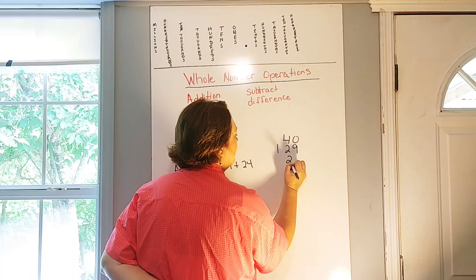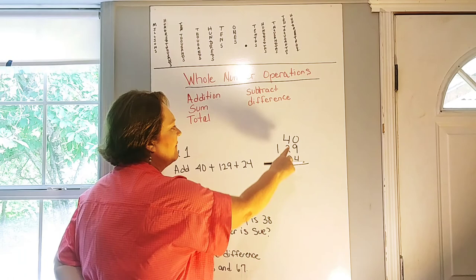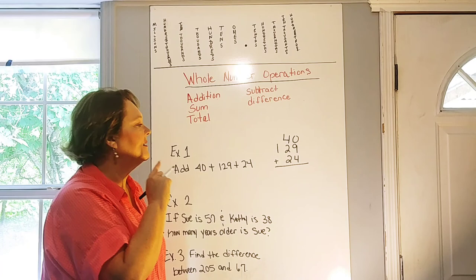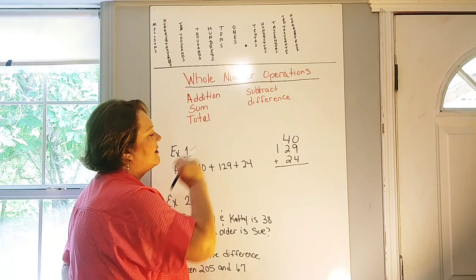Going back to our last lesson, we see that all of these have a number in the ones place. All of these have a number in the tens place, but only one has a number in the hundreds place. So we need to line those up from right to left and make sure that they are in line with their ones, their tens, their hundreds, and so on.